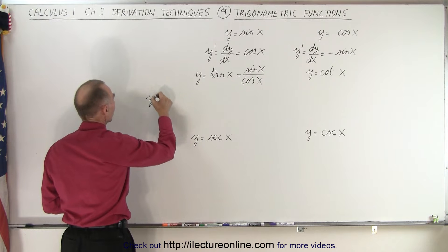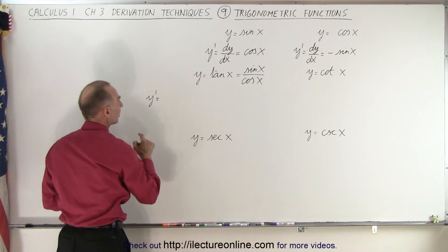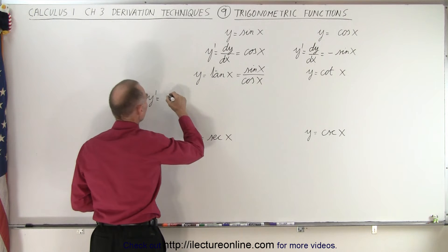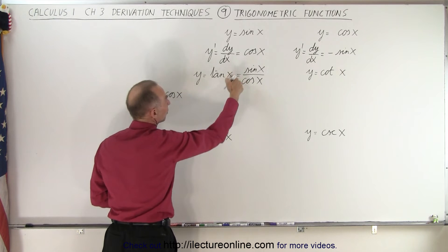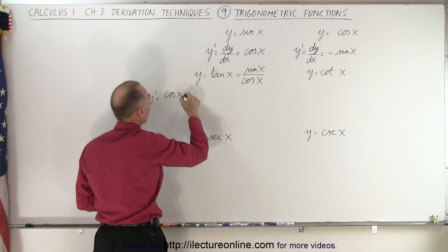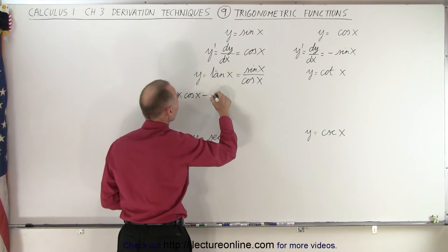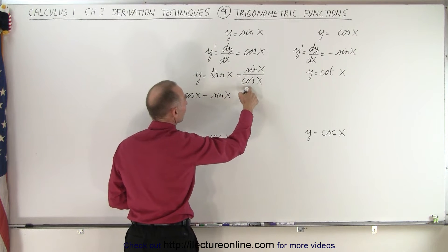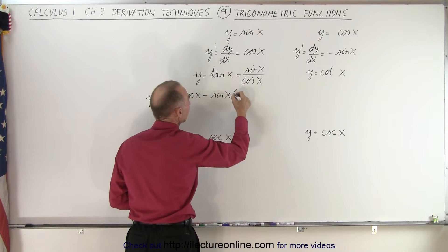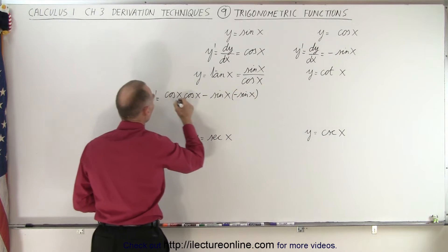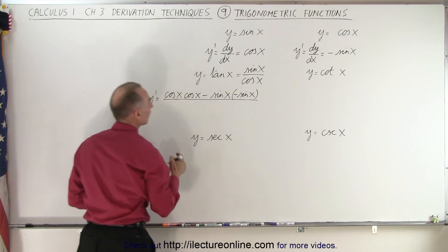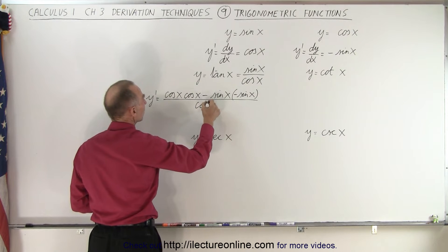We can say that y prime is equal to the denominator, which is the cosine of x, times the derivative of the numerator, which is the cosine of x, minus the numerator, which is the sine of x, times the derivative of the denominator, which is the negative sine of x, all divided by the denominator squared.